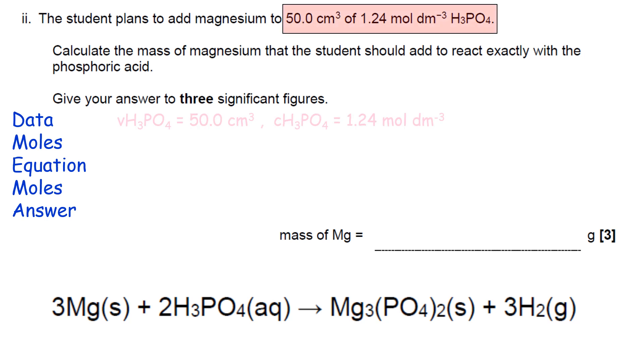So starting with our data, we list that, and then you can work out the number of moles using C times V, concentration times volume, remembering, of course, to divide your volume by 1,000. So you get 0.062 moles.